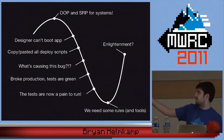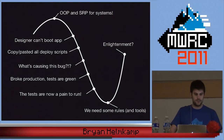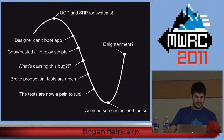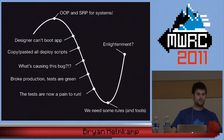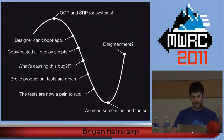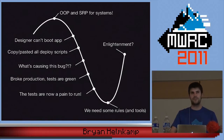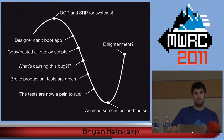Descending down the curve, we ran into issues like: our designer can't boot the app anymore because the script server doesn't work; we just copied and pasted our deploy scripts; we've got a bug and we don't really know where it is — it's not just one data store and one set of code, it's three data stores and three sets of code; our tests are green but production just broke; and the tests are such a pain to run that nobody really runs them locally, just on CI, and CI is getting redder and redder.